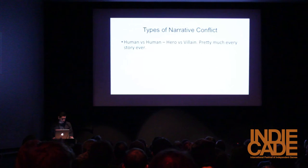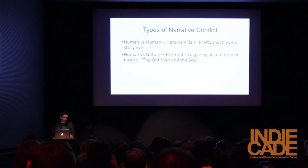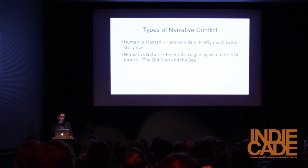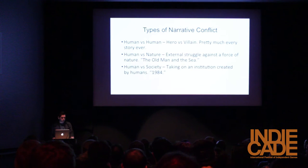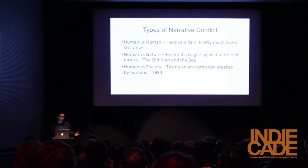We have human versus human, which is the hero versus villain story — pretty much every story ever. Like 95% or more of all conflict in stories is someone fighting against someone else. The second is human versus nature: the external struggle against the force of nature. For example, in The Old Man and the Sea, it's basically about a guy who goes out fishing and has problems dealing with a marlin and sharks. We also have human versus society, where the protagonist takes on an institution created by humans — for example, 1984, or stories where someone takes on a global conspiracy or some facet of society.